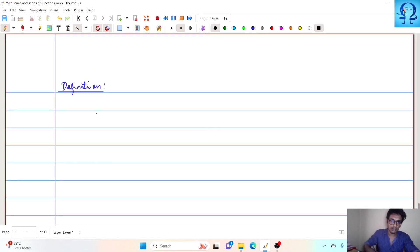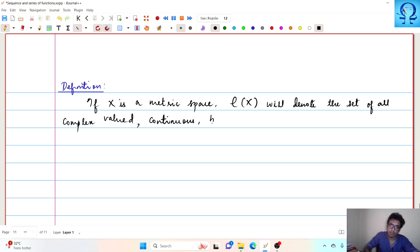Welcome. Now we will make a definition. If X is a metric space, then script C of X will denote the set of all complex valued functions. So whenever we talk about complex valued functions, of course real values can also be treated. Complex valued,